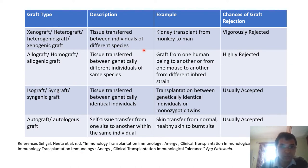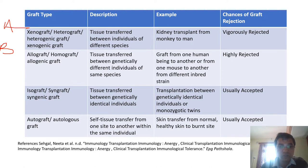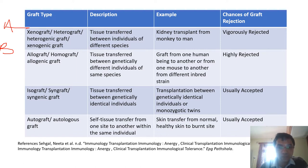Here are some graft types with descriptions and examples. The first is xenograft. Xenograft means when individuals of different species are involved — for example, species A and species B. When an organ or tissue from a member of one species is transplanted into a member of another species, this is known as xenograft or heterograft. An example is the transplant of a kidney from a monkey to a human, since they are different species, and such grafts are vigorously rejected.